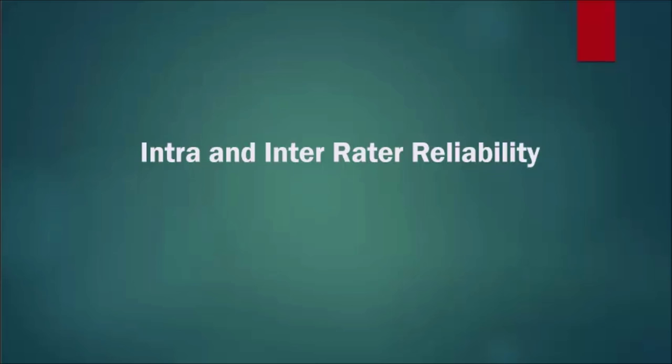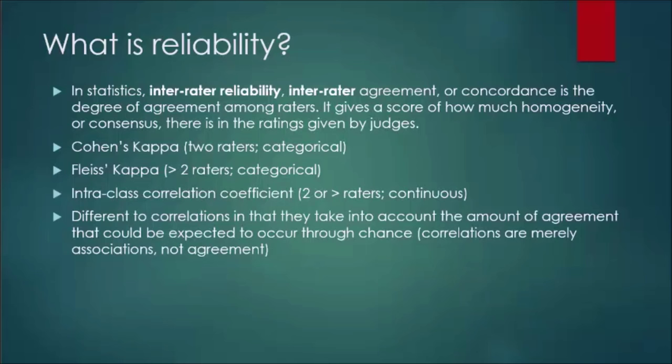So, to start off with, what is reliability? In statistics, inter-rater reliability, or inter-rater agreement, or concordance, is the degree of agreement among raters. It gives a score of how much homogeneity or consensus there is in the ratings given by at least two different judges.